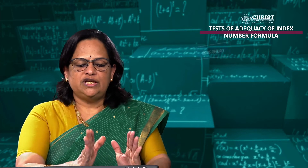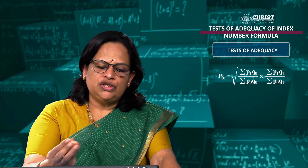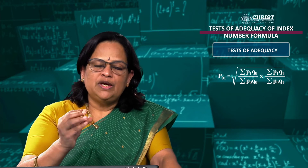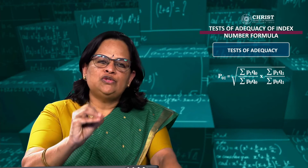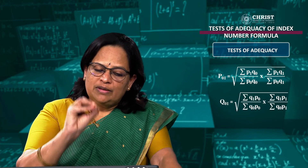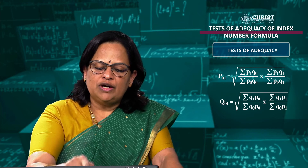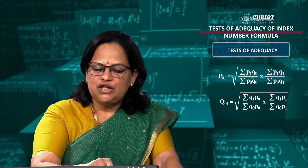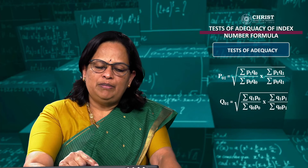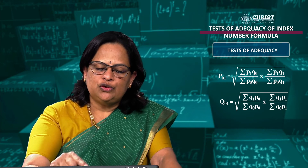The basic equation for Fisher's ideal index is the square root of (σP1Q0/σP0Q0) × (σP1Q1/σP0Q1). To get Q01, we substitute Q wherever P appears and P wherever Q appears. So Q01 becomes the square root of (σQ1P0/σQ0P0) × (σQ1P1/σQ0P1).